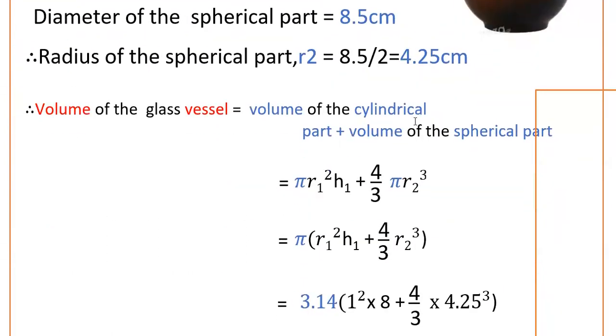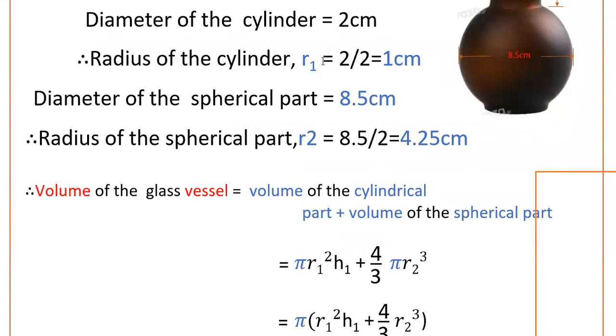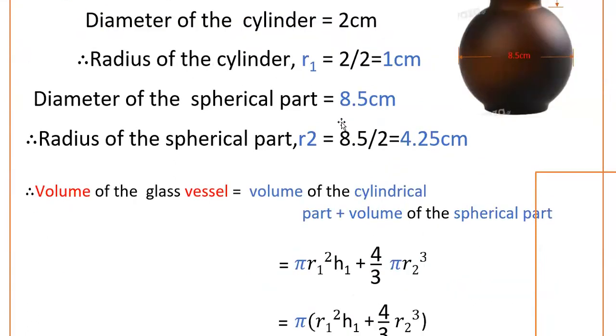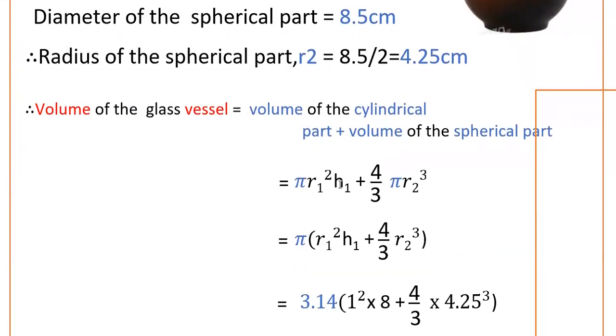And volume of the cylinder is πr²h. So, πr₁² where r is r₁ and h is h₁. So, πr₁²h₁ plus volume of the spherical part is 4/3 πr₂³.